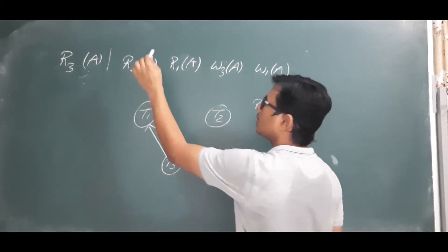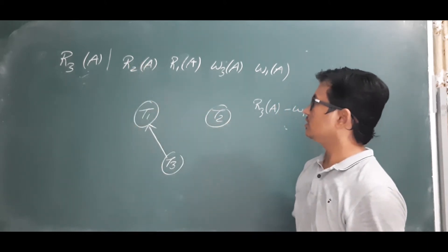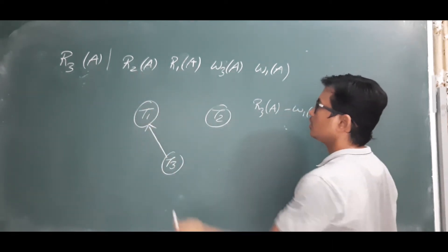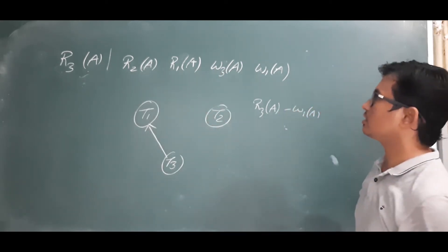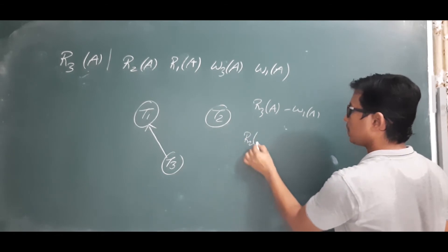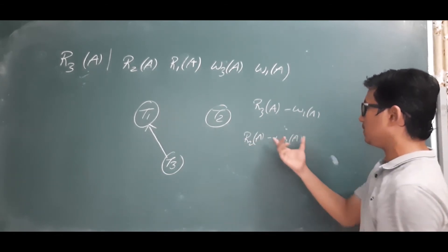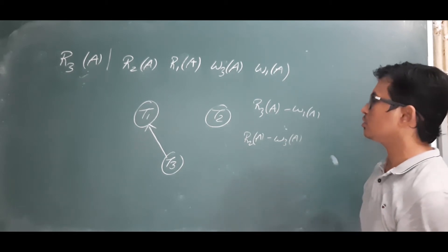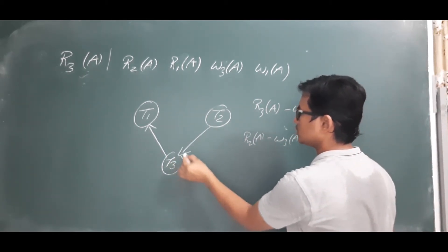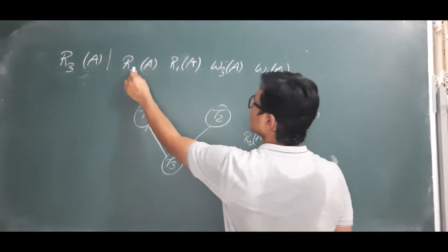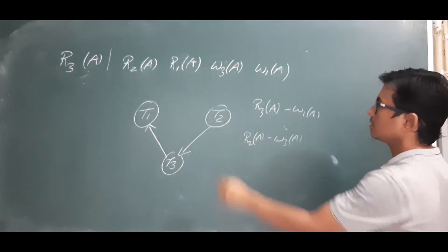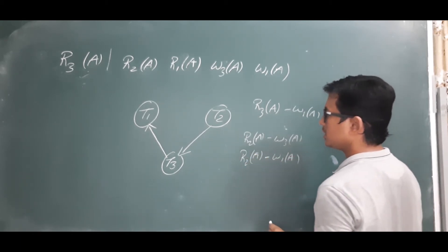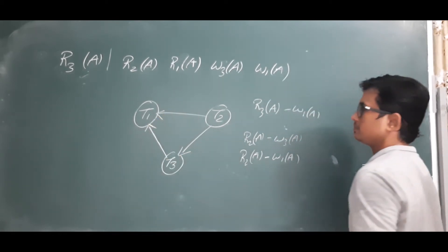Now we check R2(a). R2(a) and R1(a) — not a conflict, both are read operations. R2(a) and W3(a) — that is a conflict, because they are on the same data item A, on two different transactions, one reading and one writing. So there is an edge from T2 to T3. Then R2(a) and W1(a) — also a conflicting operation, so there should be an edge from T2 to T1.